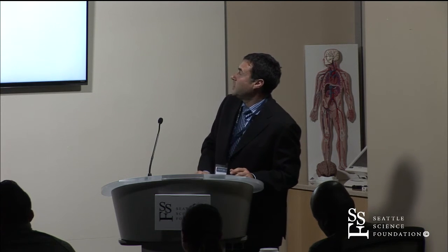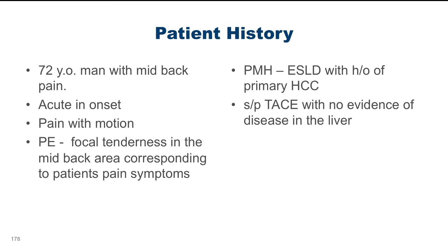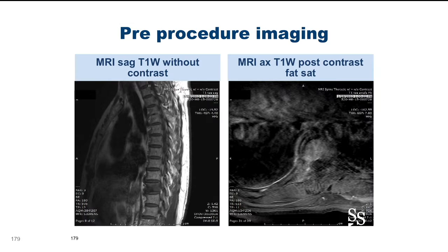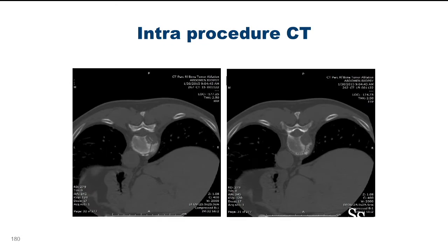A 72-year-old man with mid-back pain, acute onset, pain with motion. Physical exam: focal tenderness in the mid-back area. End-stage liver disease with history of HCC status post-resection. This patient was a golfer and his biggest issue was that he couldn't golf. You can see the tumor infiltrating the vertebral body on the right side and extending through the pedicle posteriorly.